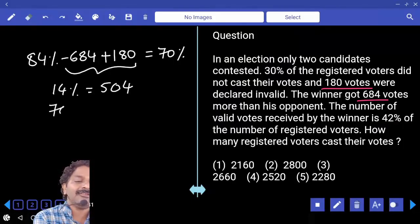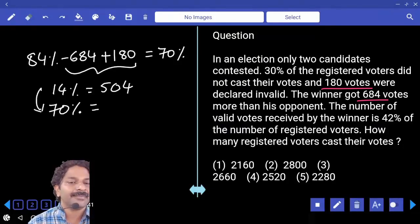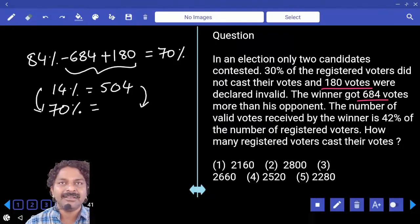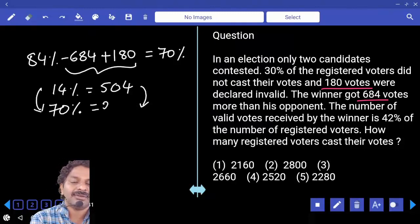And we were asked to calculate votes polled, which is 70% only. Exactly 5 times of 14%, 5 times of this number, in the sense 10 times and half only. How much is that? 2520.